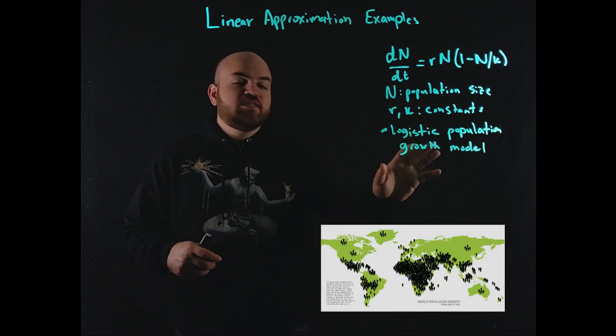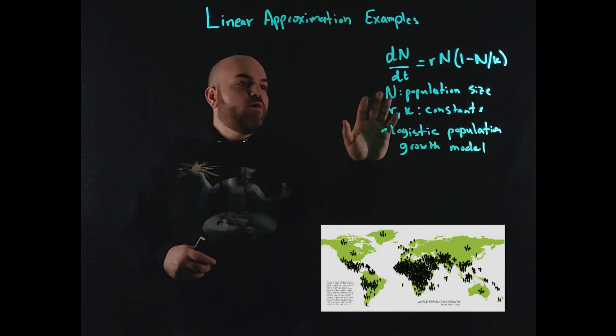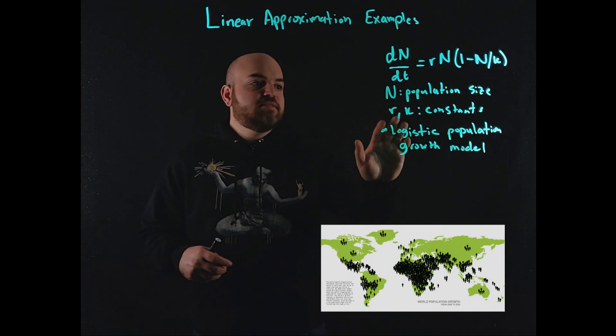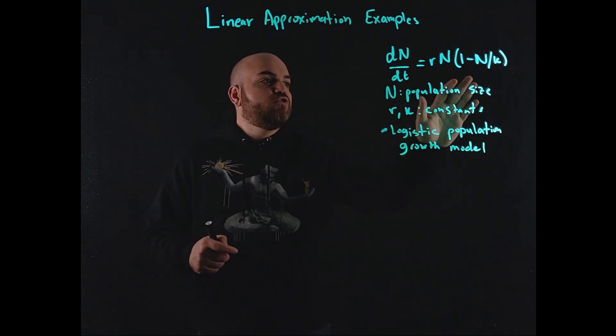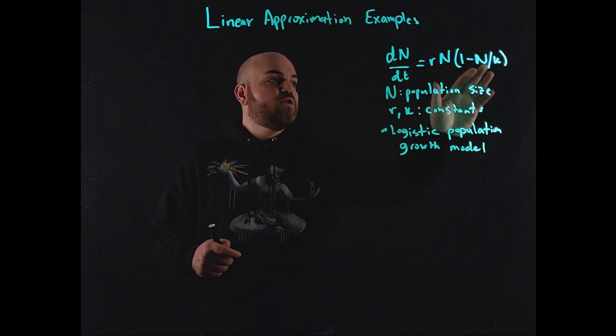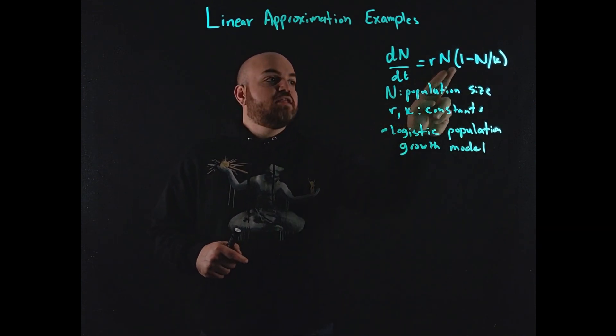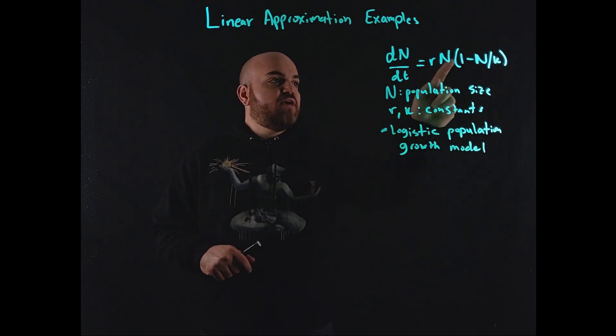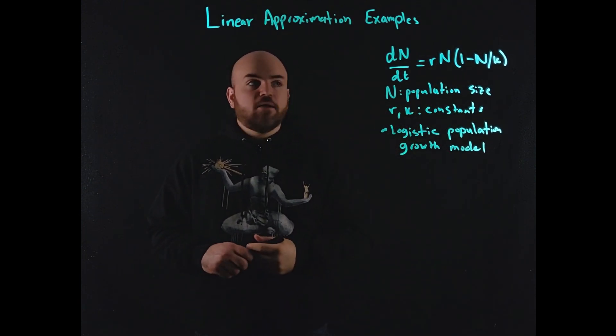So this is the logistic population growth model, where we have n as the population size and r and k are some constants. So the differential equation is the time derivative of n is equal to rn times 1 minus n over k. This is clearly a nonlinear system because we have n times n, n squared, right?